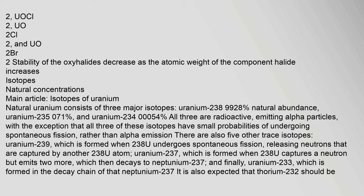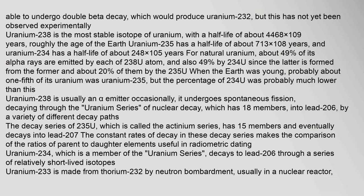Natural uranium consists of three major isotopes: uranium-238 (99.28% natural abundance), uranium-235 (0.71%), and uranium-234 (0.0054%). All three are radioactive, emitting alpha particles, though all three also have small probabilities of undergoing spontaneous fission rather than alpha emission. There are also five other trace isotopes: uranium-239, formed when U-238 undergoes spontaneous fission and captures neutrons; uranium-237, formed when U-238 captures a neutron but emits two more, then decays to neptunium-237; and uranium-233, formed in the decay chain of neptunium-237. It is also expected that thorium-232 should be able to undergo double beta decay to produce uranium-232, but this has not yet been observed experimentally.